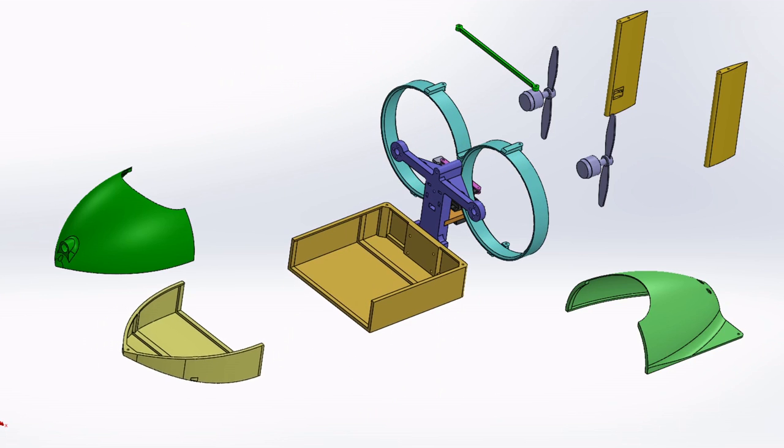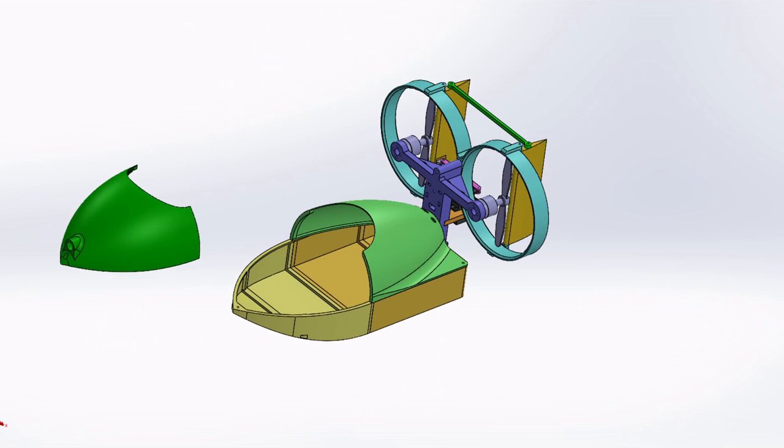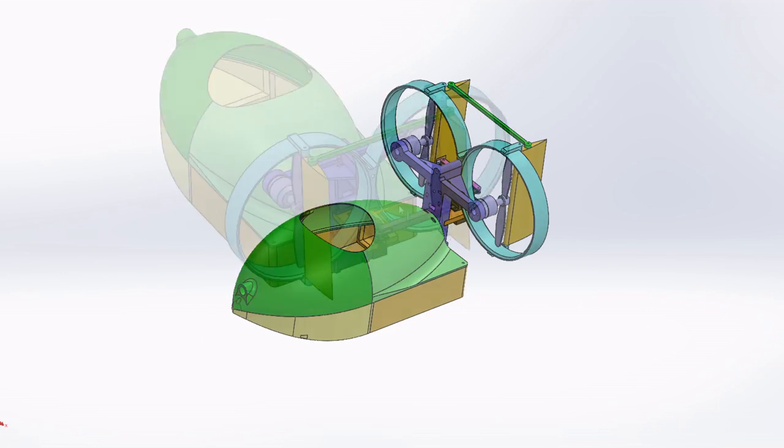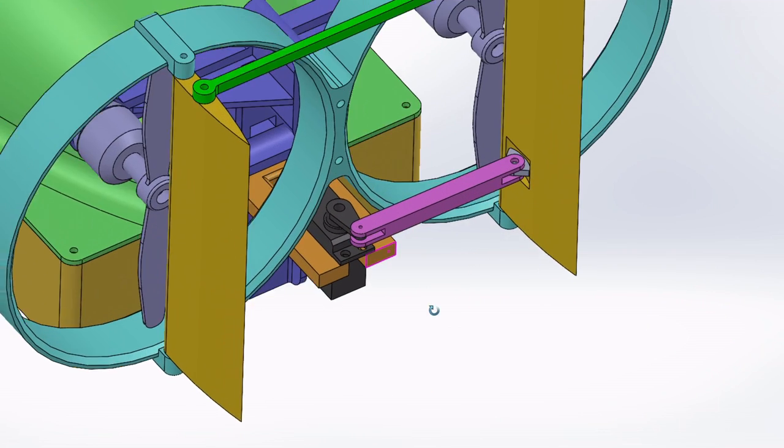The hull is 3D printed in multiple thin sections and glued together. For propulsion, I plan to use two counter-rotating propellers to cancel out any torque roll or P-factor that might occur when the boat rapidly pitches up or down.